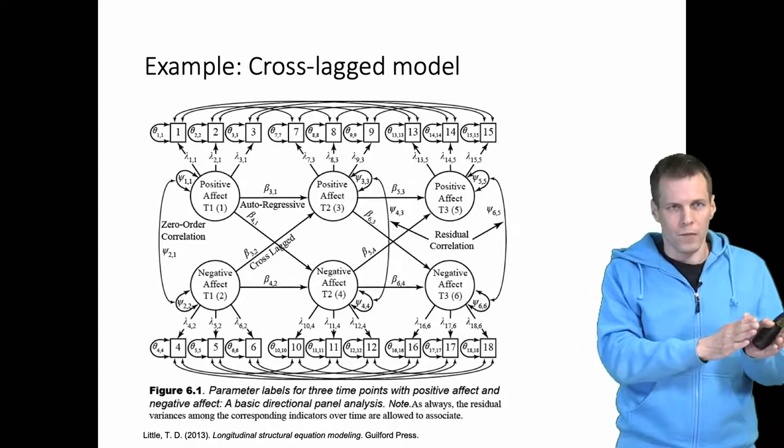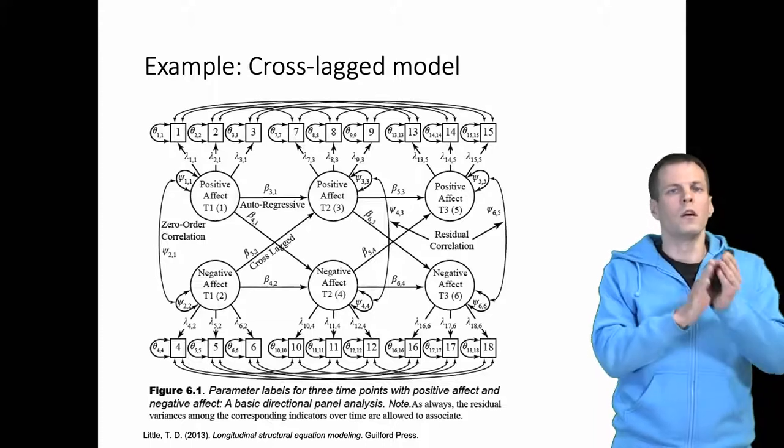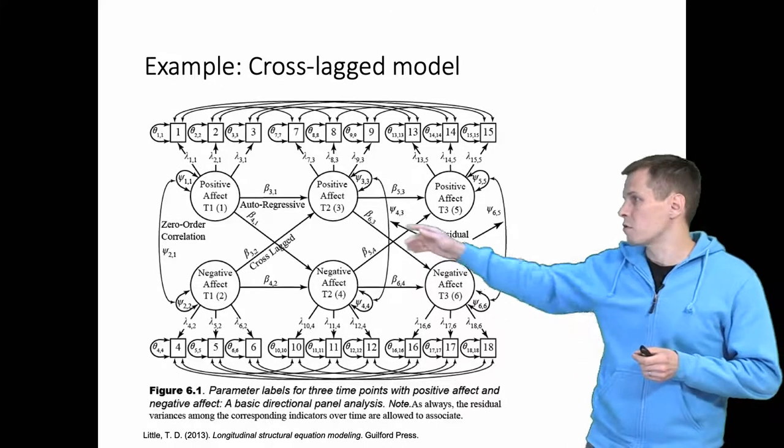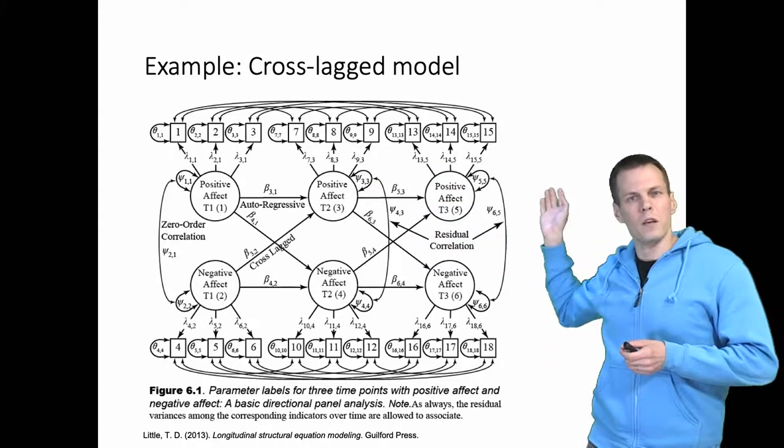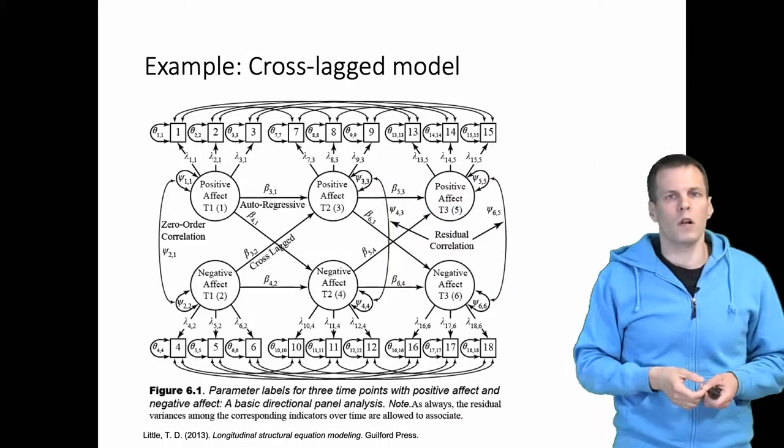So all the first indicator observations are allowed to be freely correlated, all the second indicator observations are allowed to be freely correlated, and all the third indicator observations are allowed to be freely correlated. So this is the correlations over time.